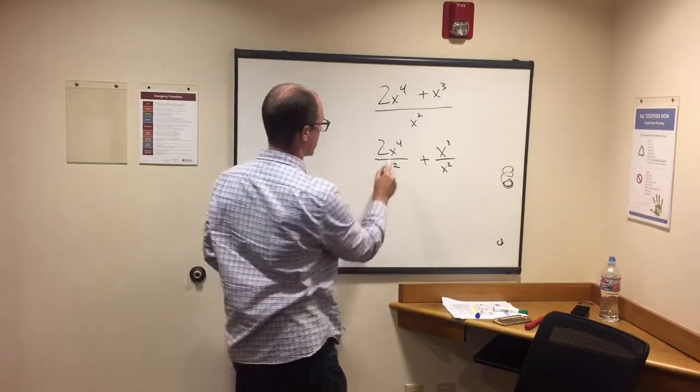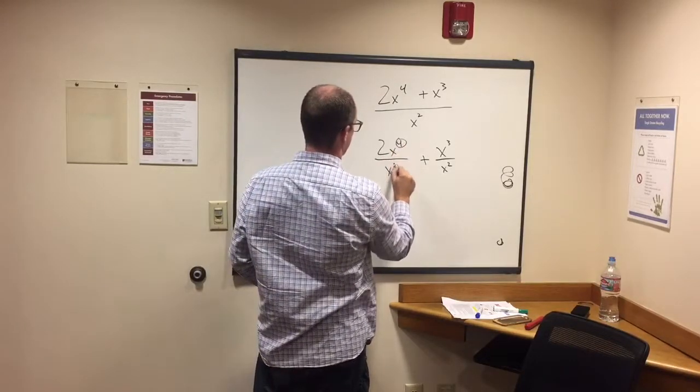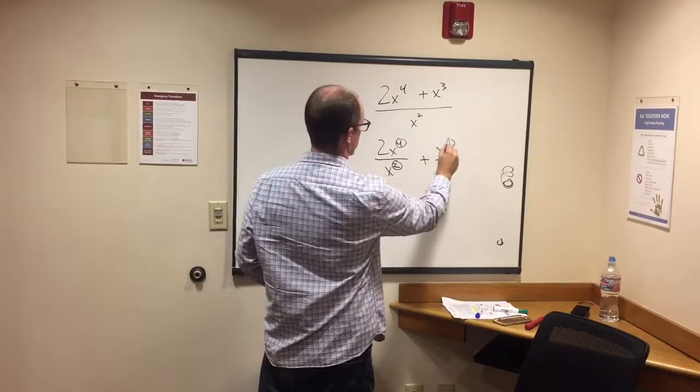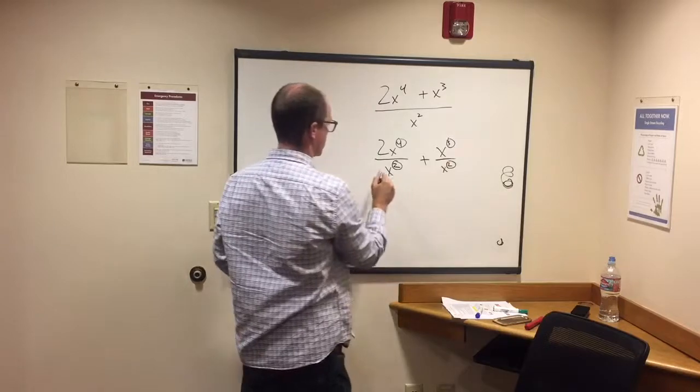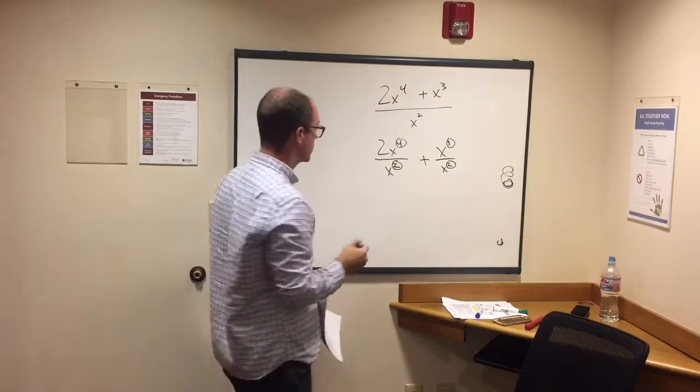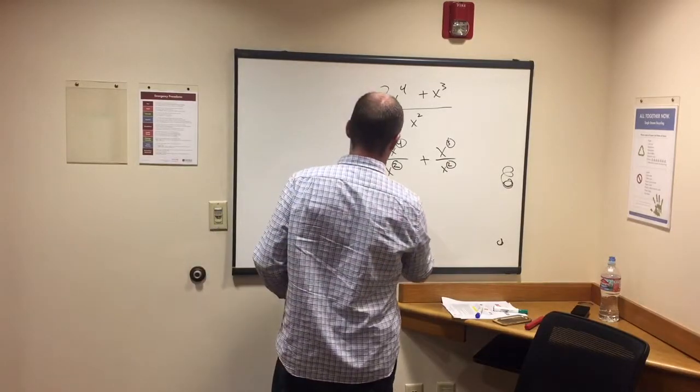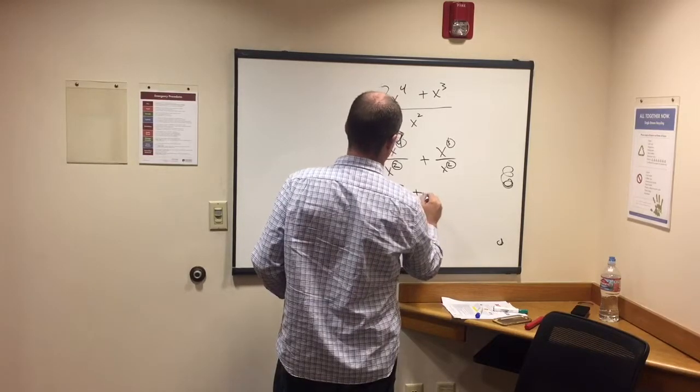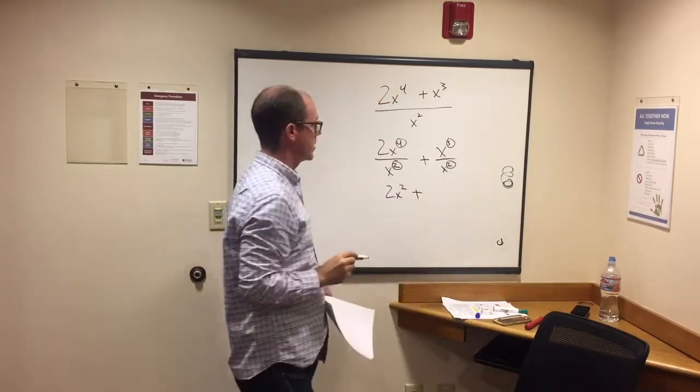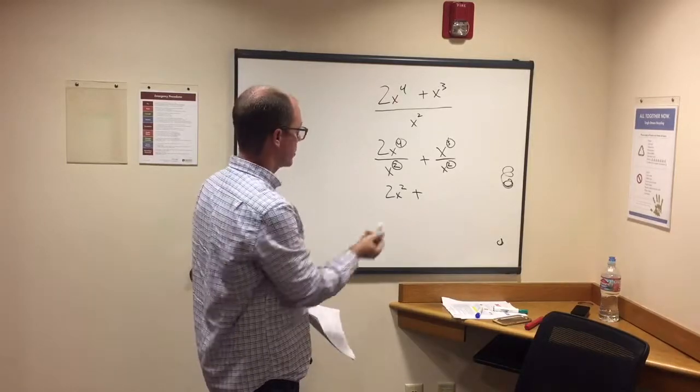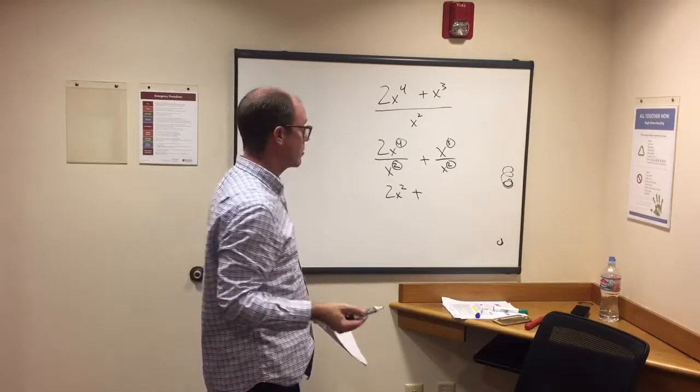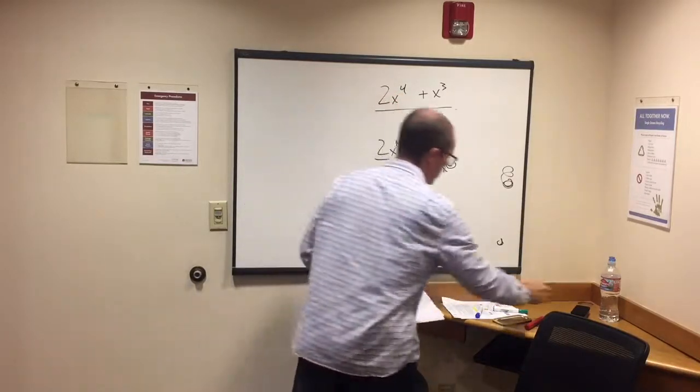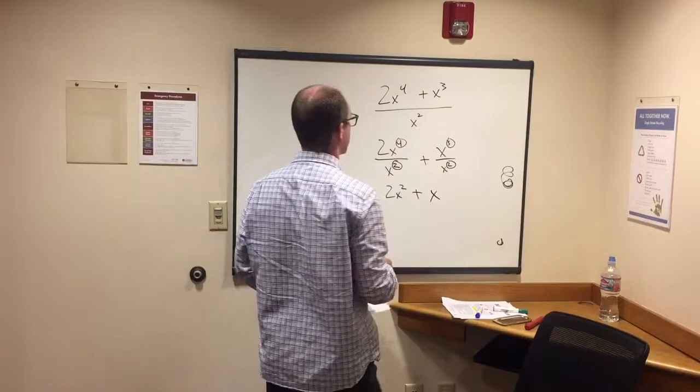Now we just need to understand that we divide, subtract 4 from 2 and 3 from 2. 4 minus 2 is 2. That's 2x squared plus 3 minus 2 is 1. So that would be x to the 1st power or just x. We have 2x squared plus x. So that's the distributive property.